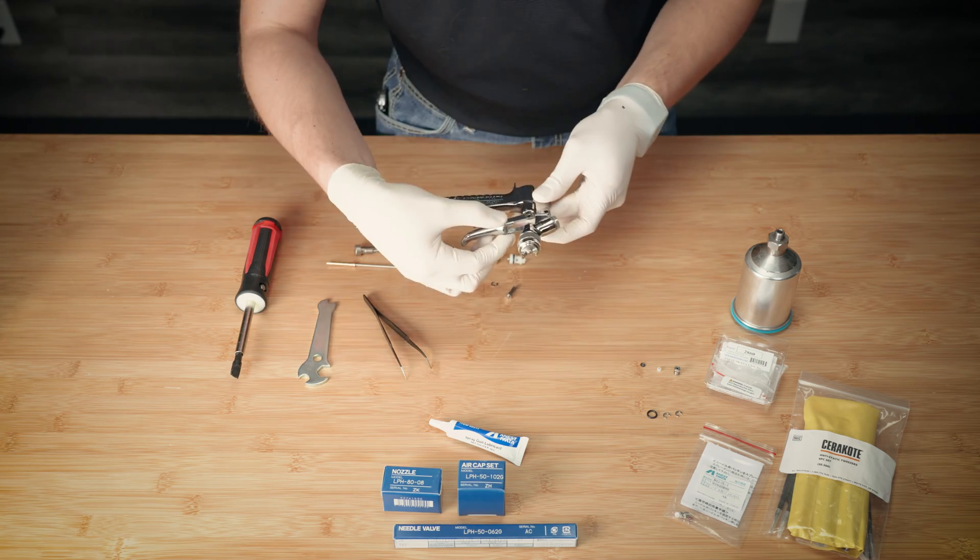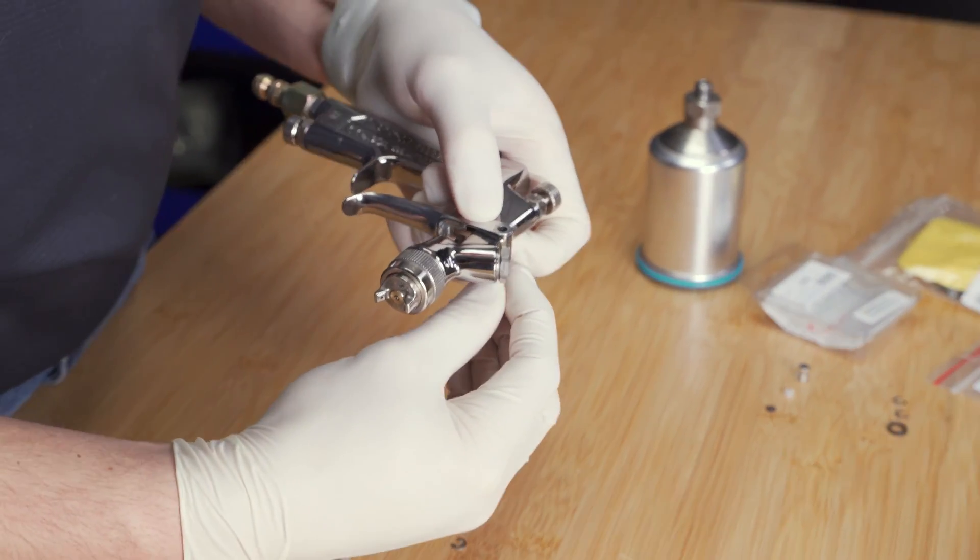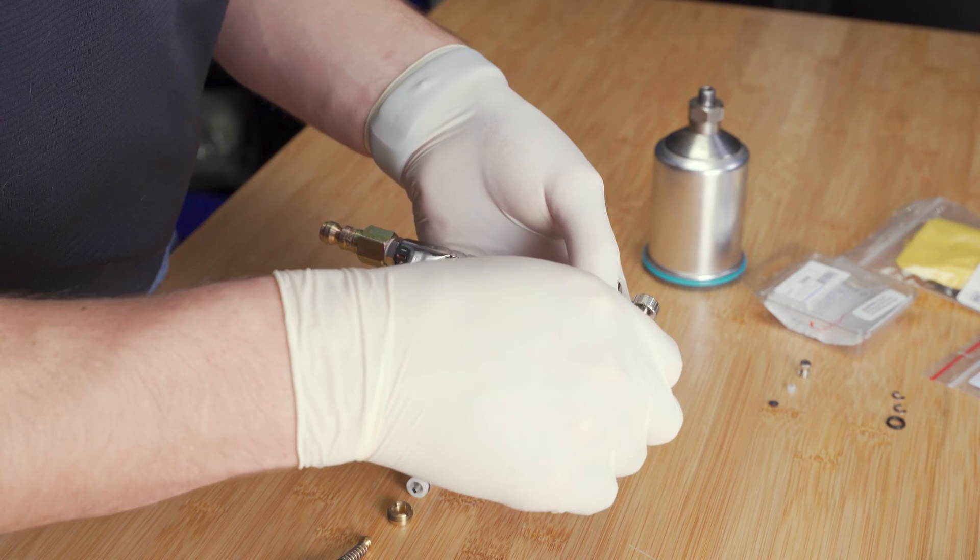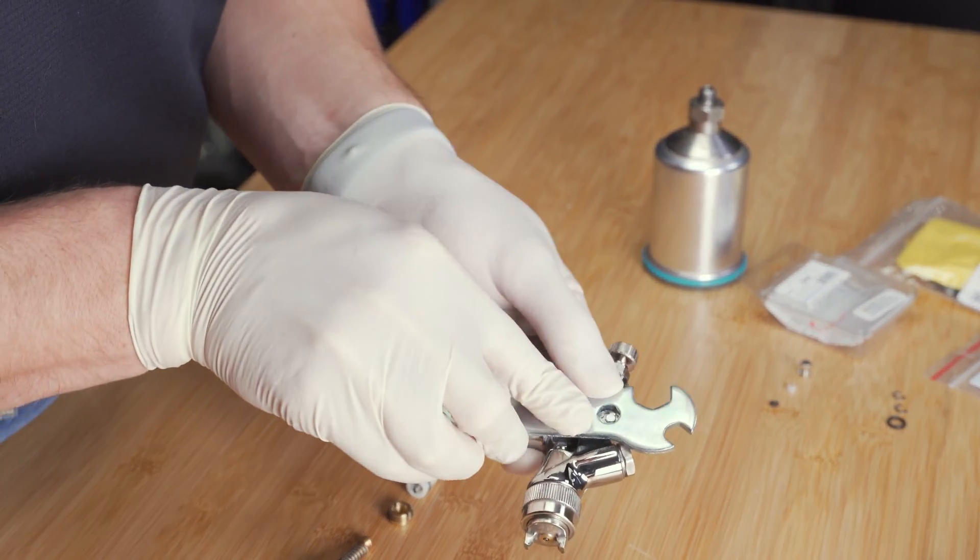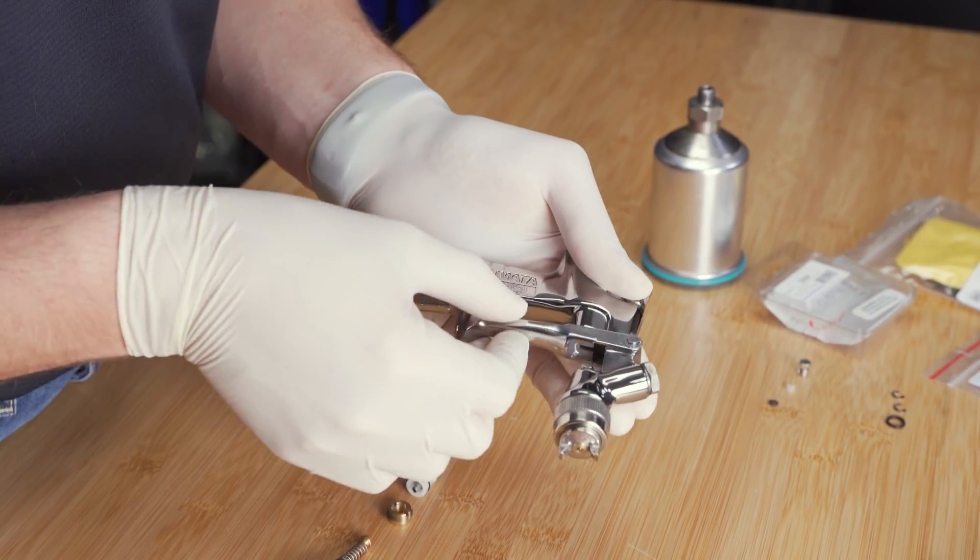Reinstall the trigger, slide the trigger pin through the housing, and place the E-clip against the pin. Using the wrench, reinstall the clip, and verify trigger operation.